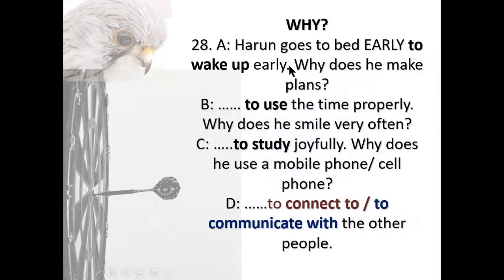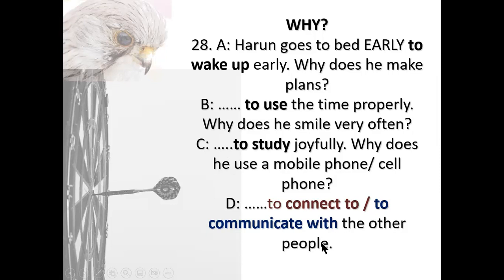Dialogue 28: Harun goes to bed early — to wake up early. Why does Harun go to bed early? To wake up early. Why does he make plans? To use the time properly. Why does he smile very often? To study joyfully. Why does he use a mobile phone? To connect to or to communicate with other people — just like everybody does.